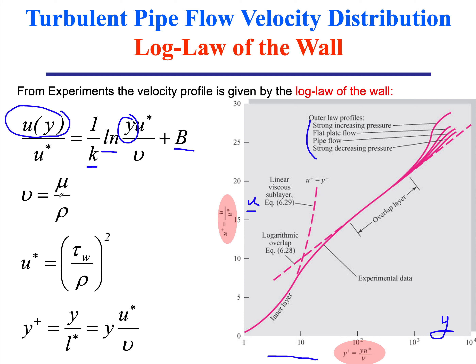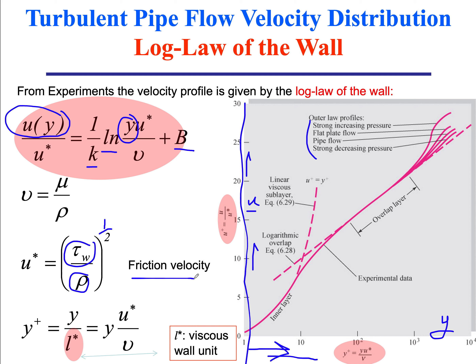Now the scaling arguments also lead to a logarithmic profile, based on velocity scales and length scales. If this is the wall of my pipe at y equals zero, there is a shear stress on the wall. When you divide the wall shear stress by the density and take the square root, you get what's called the friction velocity u-star — the important velocity scale very close to the wall.